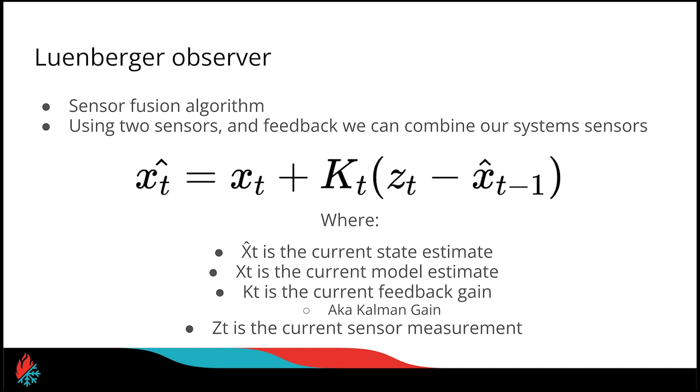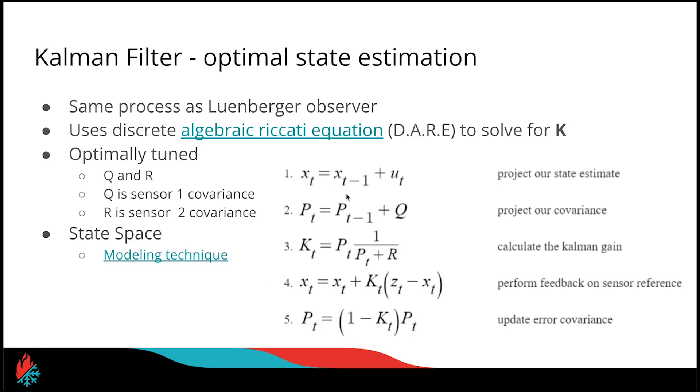Another very powerful algorithm is that of a Luenberger observer. This can be used as a sensor fusion algorithm, and here we have it set up to use two sensors. With feedback, we can combine these two sensors to get a much better estimate of our system. The current state estimate, something like a position and acceleration or velocity, is equal to our model's estimate, which in this case is our first sensor. Then we're adding on feedback between our second sensor Z and our previous state estimate. High values of K will converge and trust the second sensor more, and low values of K will do the opposite. The challenge with this is tuning this value of K, and that's where the Kalman filter comes in.